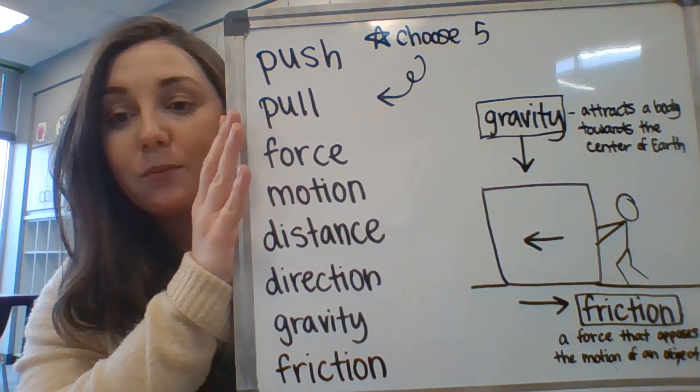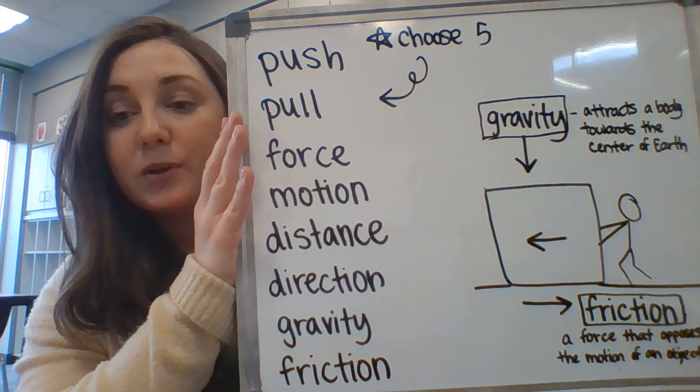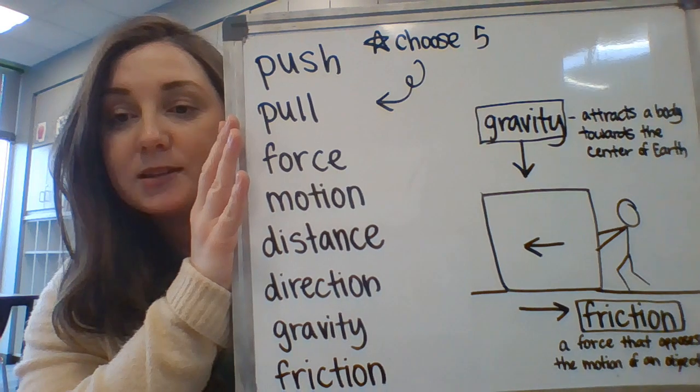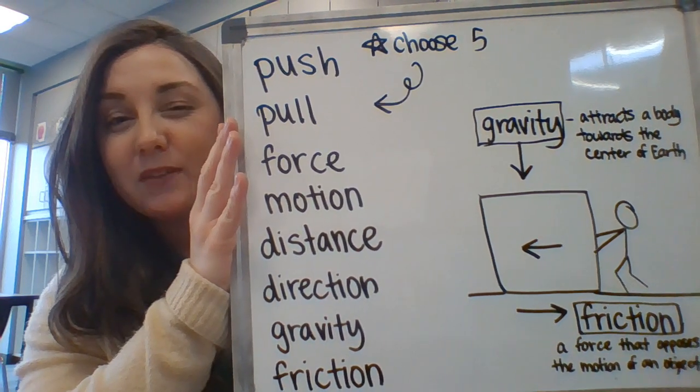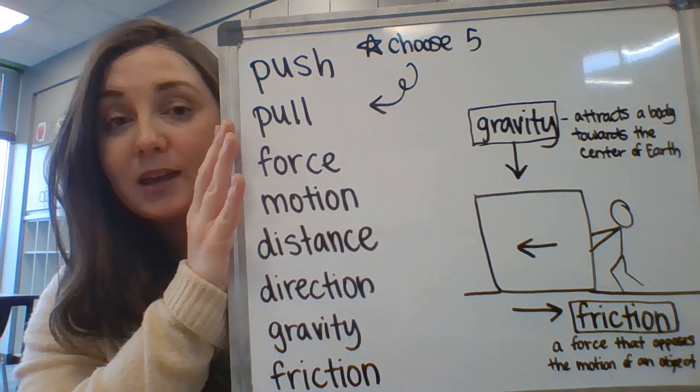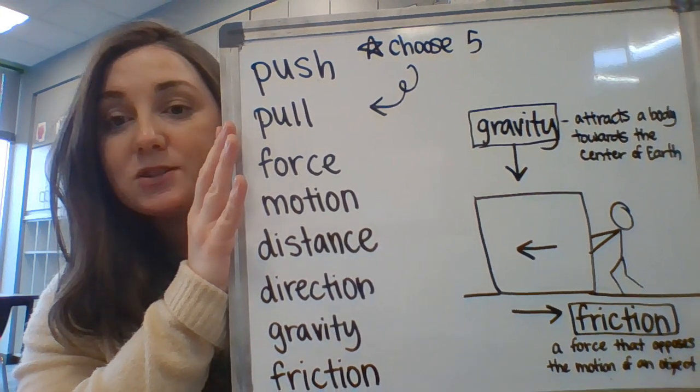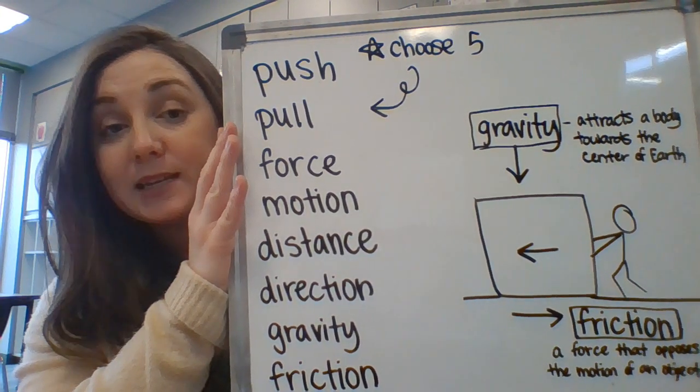I went ahead and did a second one as well. Friction is whenever a force opposes the motion of another object. You can see that the floor is kind of keeping the box in place, whereas the person is trying to push the box, and so those forces are going to act against each other.